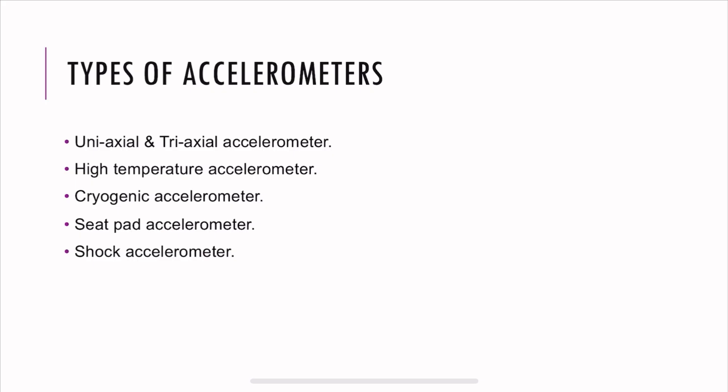There are different types of accelerometers. The most common ones are uniaxial and triaxial that we use on common applications like automotive testing or structural testing. But there are also some special accelerometers. For example, if you want to use on exhaust systems, it's going to be pretty hot.